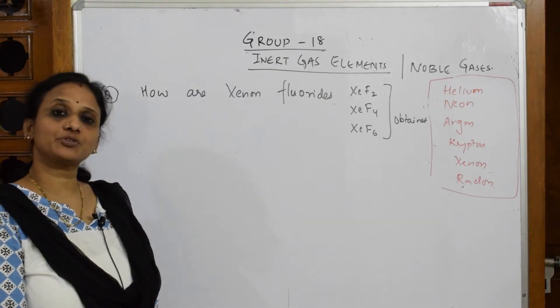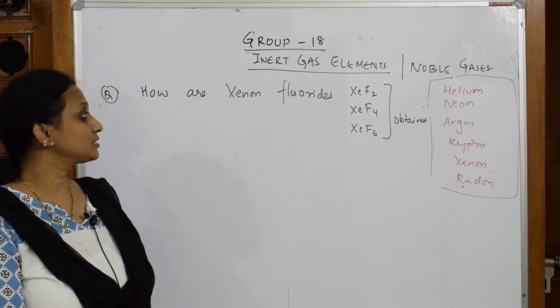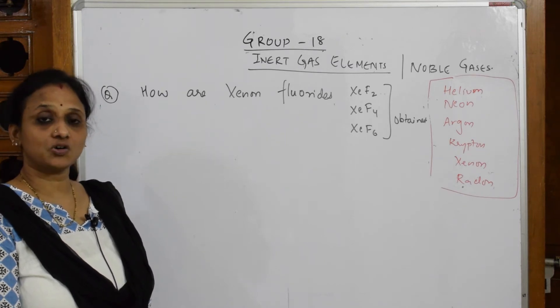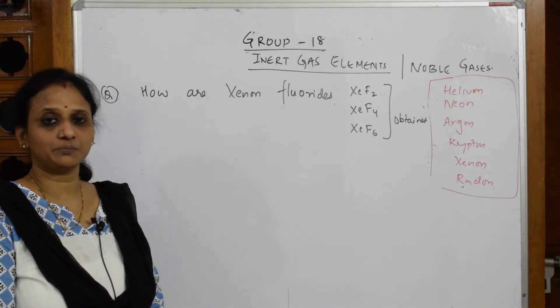Let's come back and start with the next important reaction: xenon compounds. Xenon is going to combine with fluorine and forms xenon fluorides. It also combines with oxygen and forms xenon oxy compounds of different types.